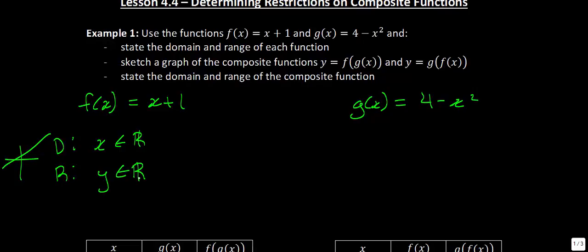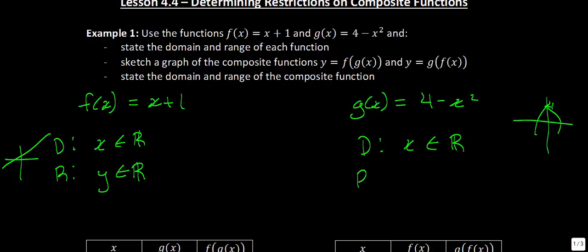For g of x, we have a quadratic function. The y-intercept would be at 4, and the graph opens downward. For the domain, x can be anything because the graph goes infinitely left and right. For the range, the highest value is at 4 and it goes downward from there, so y must be less than or equal to 4. We've now stated the domain and range for both original functions.